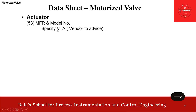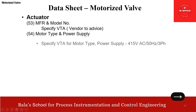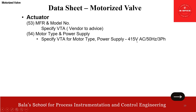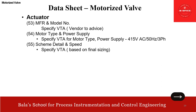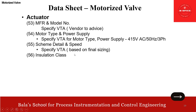For the actuator: manufacturer and model number — specify VTA. Motor type and power supply — specify VTA; of course 415 volt AC, 50 hertz, three phase. Schematic detail and speed requirement — specify VTA; it has to come from the final sizing. Then insulation class. Here I want to highlight what the insulation class requirement is. We need to specify VTA, but there are some categorizations available for insulation class. It depends on the temperature requirement.